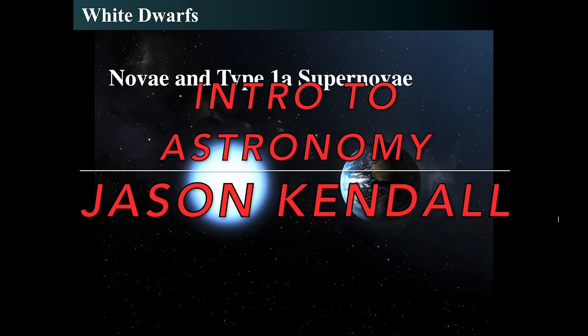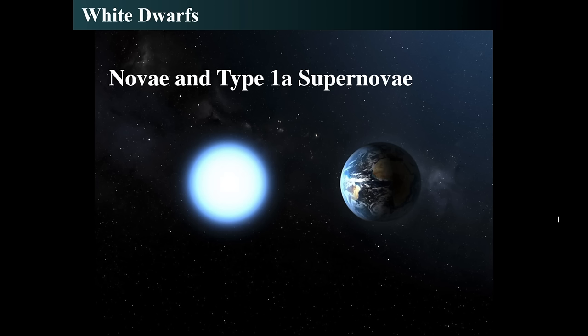We begin with this interesting graphic which cannot exist in reality because if a white dwarf were that close to the Earth, the Earth would be shredded. A white dwarf has the mass of the Sun but the size of the Earth, and that would have incredible gravitational tidal forces. Not before the intense ultraviolet light fried the Earth, boiled the oceans, and made the atmosphere boil off into space.